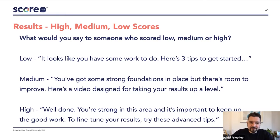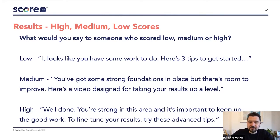If someone scored low for one of the categories, you might say it looks like you've got some work to do — here's three tips to get started. If someone scored medium, you might say you've got some strong foundations in place, but there's room to improve, and here's a video designed for taking your score up a level. And if someone scored really high, you might say well done, you're doing really well in this area — keep up the good work and do some advanced things. Consider what kind of advice you'd give people at the high, medium, and low scoring range.